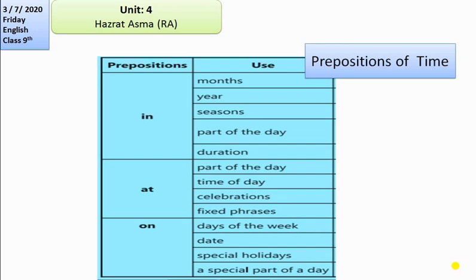When we talk about duration, we use 'in' like 'in a second,' 'in two weeks,' 'in two months.' Now for the preposition 'at': we use 'at' when talking about parts of the day and time of day — for example, 'at night,' 'at midnight,' 'at noon,' or 'at nine o'clock.' When talking about celebrations or events, we say 'at eve,' using the preposition 'at.'